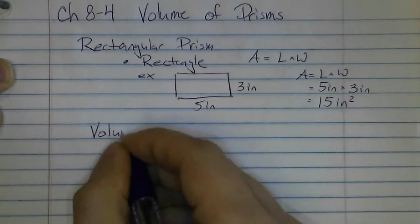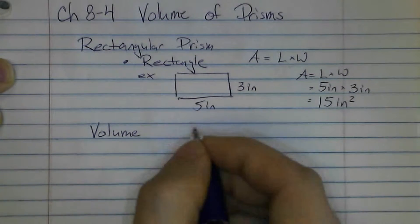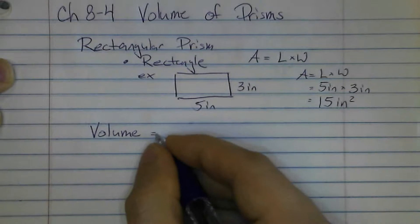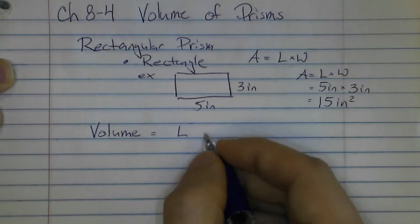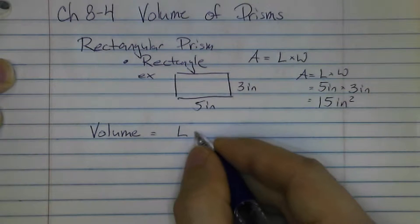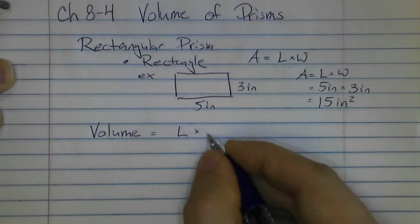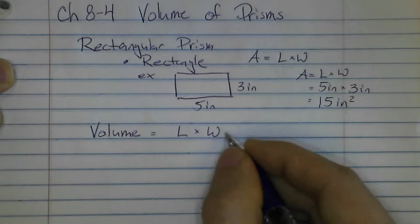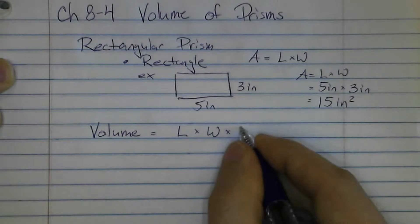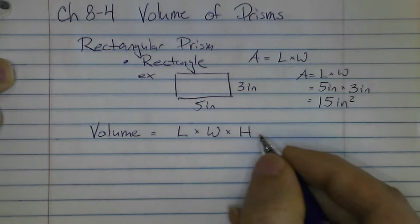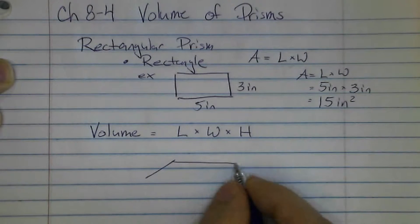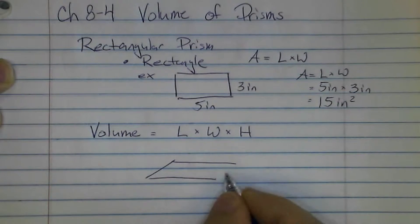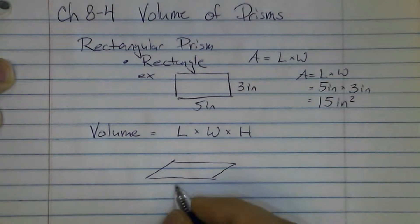For the volume of a prism, volume is going to be three-dimensional because the prism is three-dimensional. So we're going to do length times width, and our third dimension is going to be the height. Let's take a look at what one would look like using the same rectangle as our base.